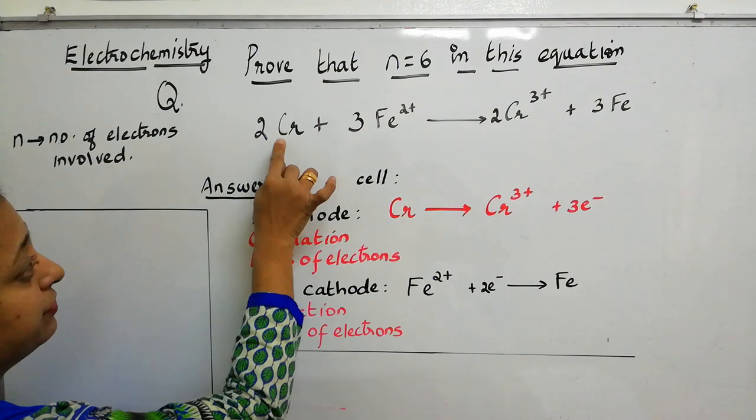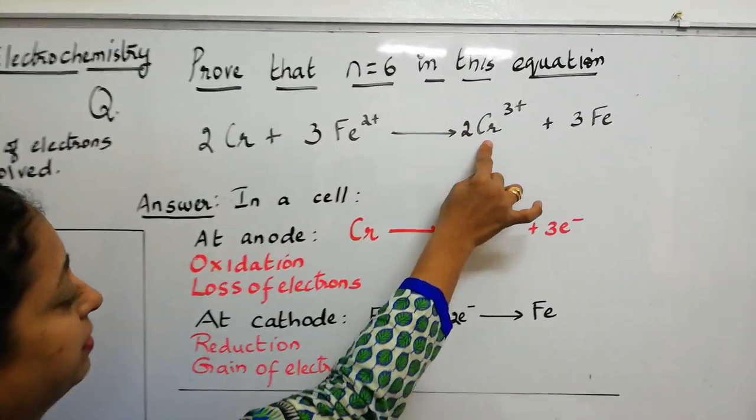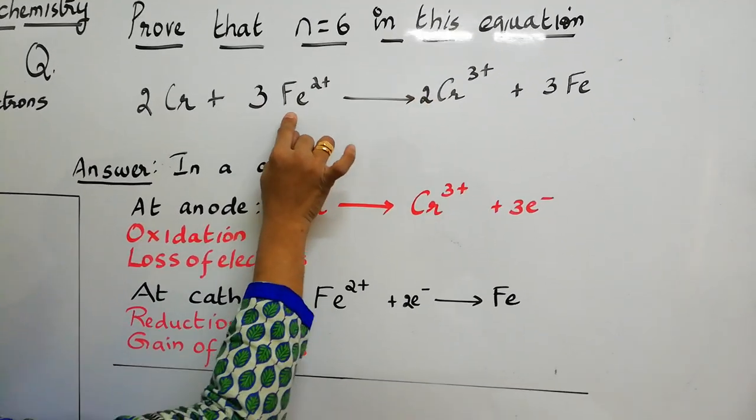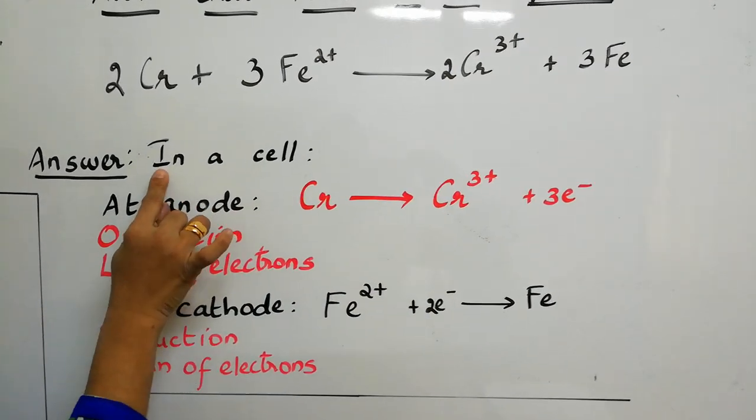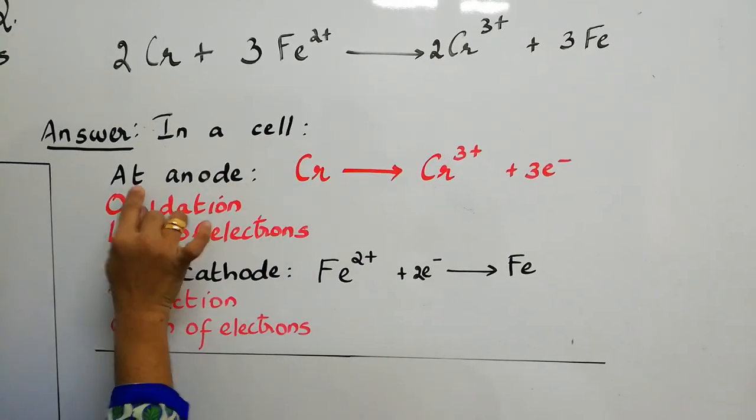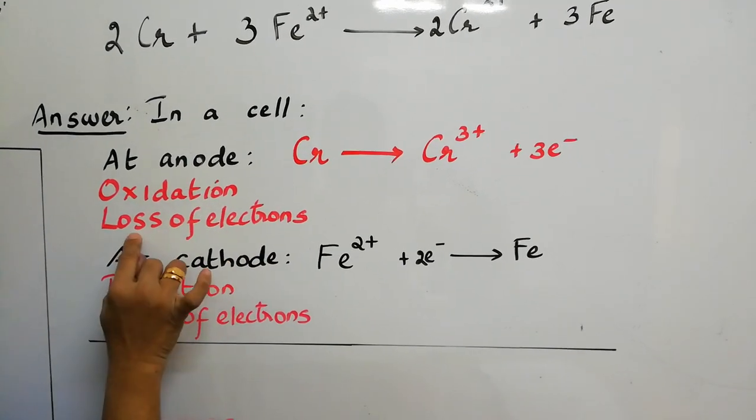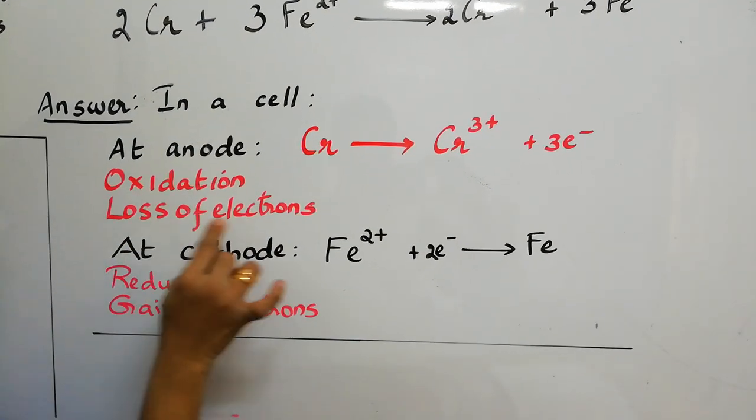The redox reaction we can compare chromium with chromium 3 plus and Fe 2 plus with Fe. The answer for that is, in a cell, at anode, oxidation takes place, which is called loss of electrons.